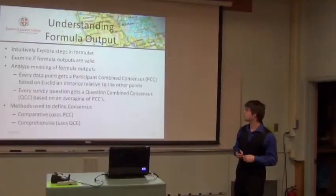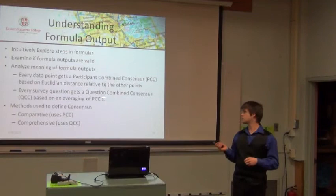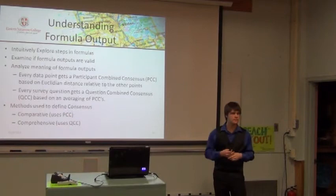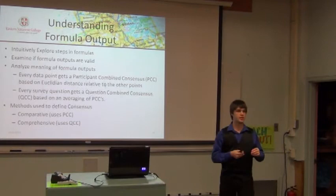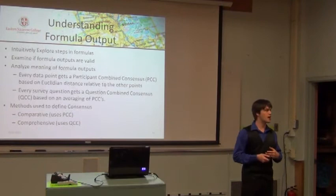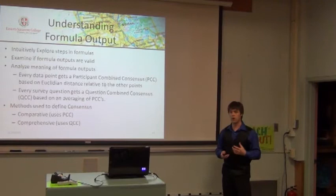The second formula we are going to look at produces the QCC — the Question Combined Consensus. The Question Combined Consensus looks at all the other points as a whole and asks: how tight is our consensus? How much distance is between all of the dots together versus just one dot relative to the other dots? This gave us our first two approaches to defining what a consensus is — is it defined by how I am relative to all the other dots, or by how tight the group is as a whole?